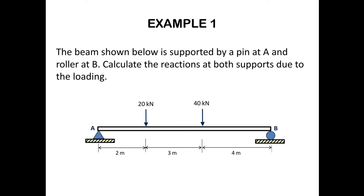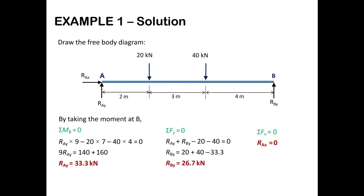Now we proceed to the solution. After identifying the support reactions, our next step is to draw the free body diagram. At point A there are two support reactions, RAY and RAX, and at point B there is one reaction, RBY. We have to calculate these three values. A 20kN point load is acting at 2m from point A and a 40kN point load is acting at 5m from point A.